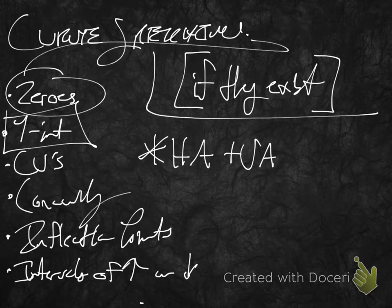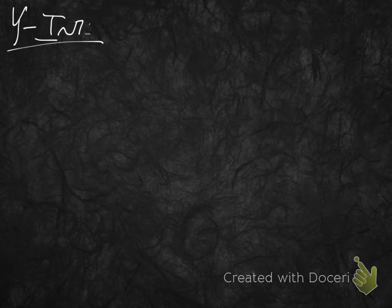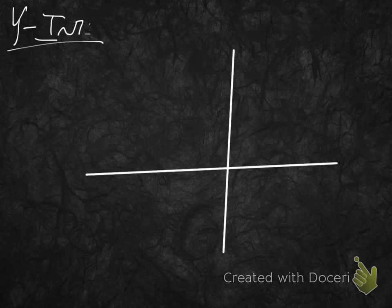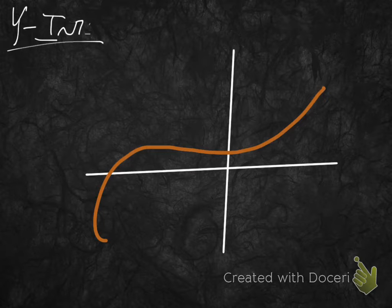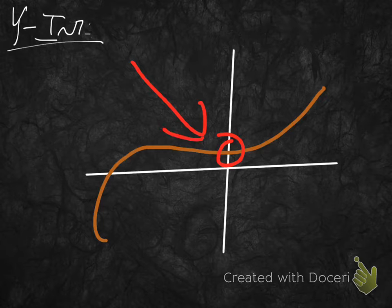Next, let's talk about y-intercepts. A y-intercept is just going to be anywhere that a function touches the y-axis. These first few things are extremely straightforward. Here is our one and only y-intercept for this function. Could there be more than one y-intercept? Well, no, there can't be, because it's not a function if there is.